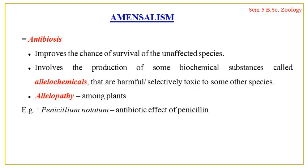Fungi and bacteria produce chemicals we refer to as antibiotics — antibiotic substances such as penicillin, streptomycin, etc., which are widespread in nature. Antibiosis or amensalism can also be found in other organisms like microcystis, Anabaena, etc., which produce toxins that are lethal to fish, ducks, and other aquatic animals. Amensalism or antibiosis can be found widespread among plants more than in any other animal group — we can find it more among plants and in the microbial world.